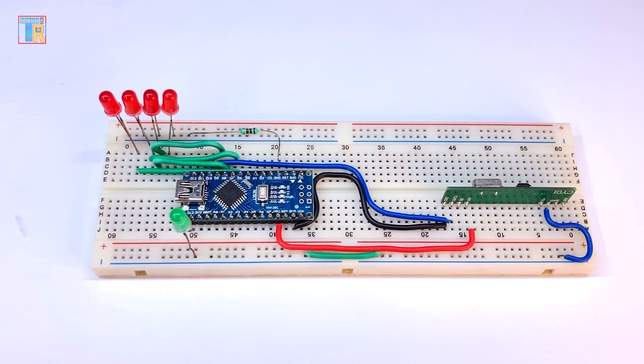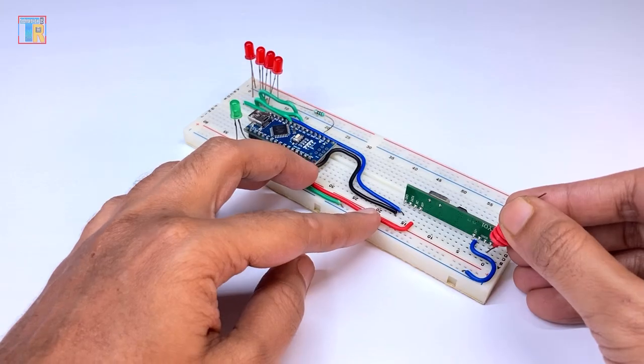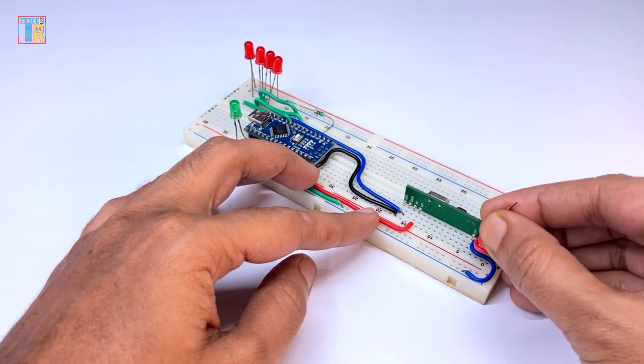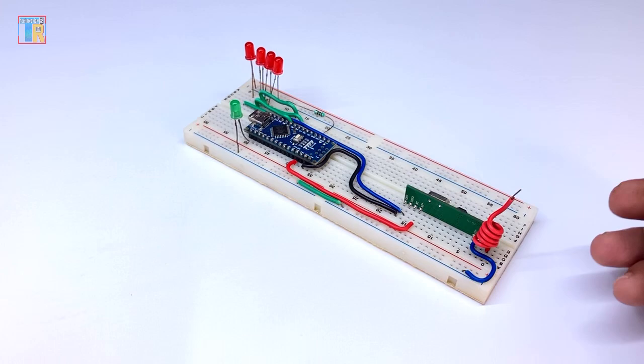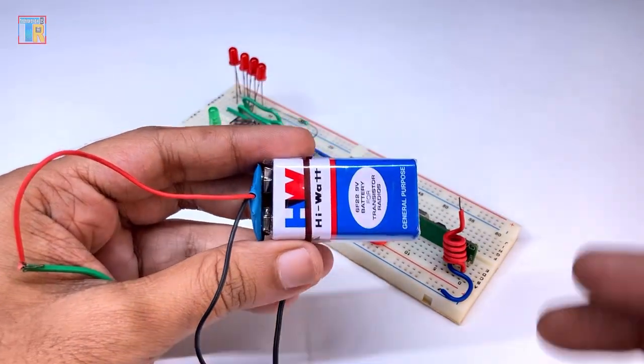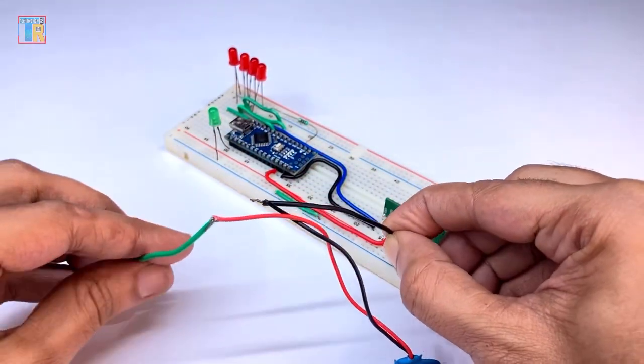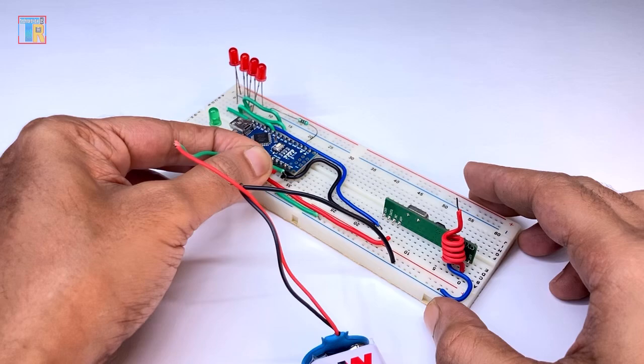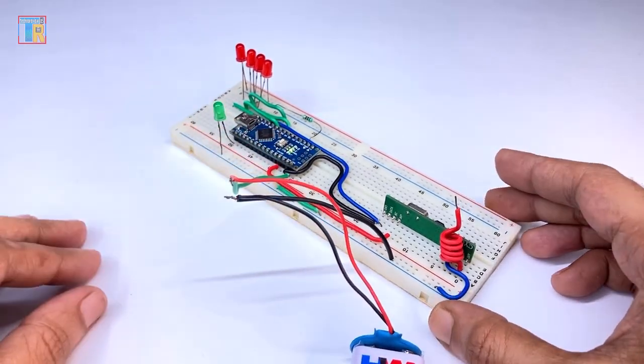Using this wire as an antenna. 9 volt battery positive to Arduino VIN and negative to Arduino GND pin. Now my both circuits are ready.